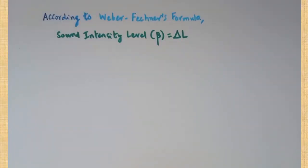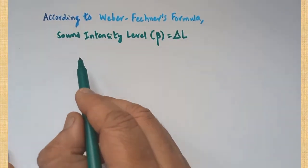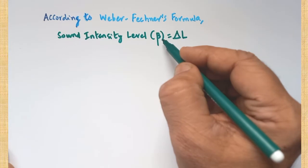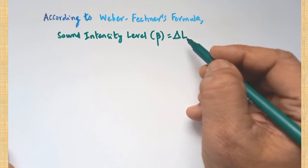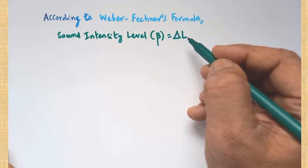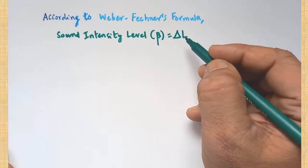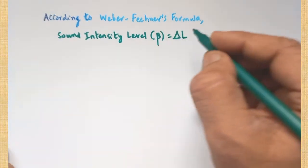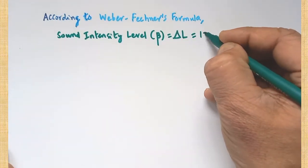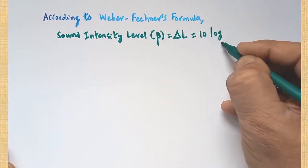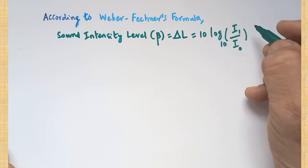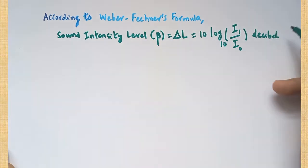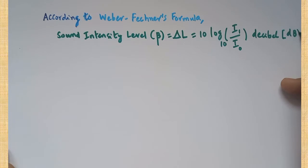We are going to calculate the sound intensity level using the Weber-Fechner formula. Sound intensity level is represented by the letter beta, also called del L, which is the difference between two loudness values L1 and L0 — the relative loudness between two precisely measured intensities. The formula is: beta equals 10 log base 10 of I1 divided by I0. This is measured in the unit called decibel, shortened as dB.